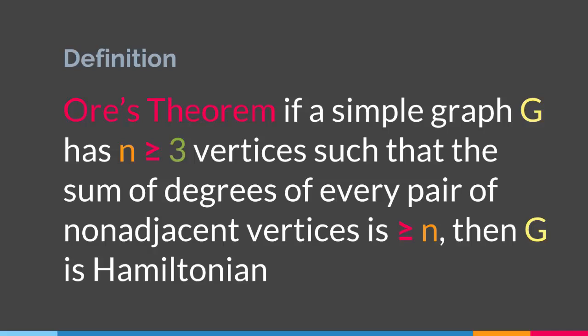In a moment I will show you an example where Ore's Theorem can be applied and the graph is Hamiltonian. And I will give you another example where Ore's Theorem will not apply and the graph is still Hamiltonian. So Ore's Theorem just gives a sufficient condition for a graph to be Hamiltonian — if the condition is present the graph will be Hamiltonian, but if the condition is not there it does not mean the graph will not be Hamiltonian.